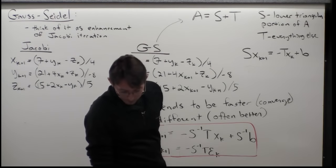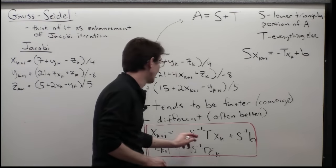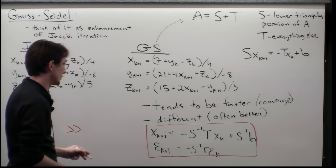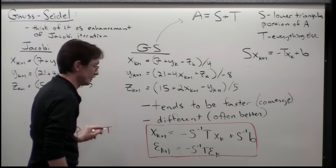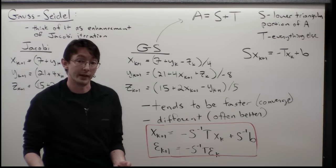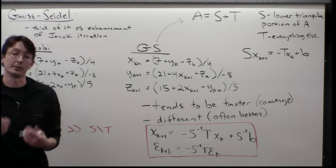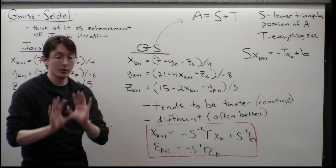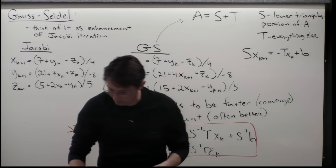In MATLAB, S^{-1}T is computed using S backslash T, which will automatically use forward substitution for a lower triangular S — the fastest method available. Let's code this up to get a feel for what the Gauss-Seidel algorithm is doing.